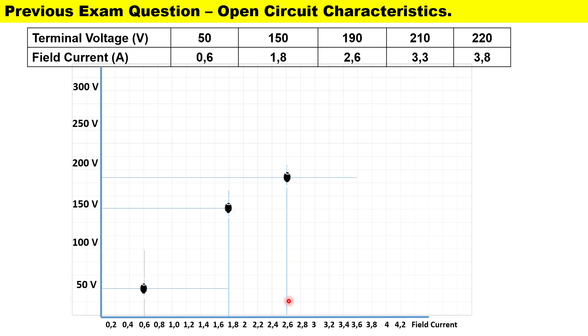For our fourth plot we have 3.3 amps for our field current and 210 volts for our terminal voltage. Our final plot is 220 volts and 3.8 amperes. Now I haven't drawn a very straight line here but this represents the relationship between the EMF at no load and our field current at constant speed.